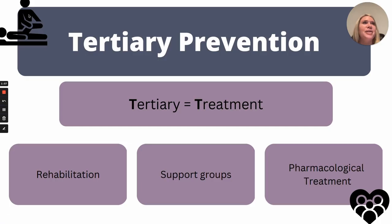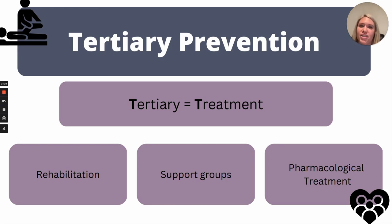And then last but not least, we have tertiary prevention. And once again, we can think tertiary equals treatment. They really made it that easy for us. So with tertiary prevention, we are preventing the condition after it occurs. One way would be rehab after a patient suffers a stroke — the condition has already occurred, and now we are working to rehabilitate the patient back to their baseline as much as we can. Another way would be if a patient has a history of drug abuse and is now attending support groups to help manage their addiction. And lastly would be as simply as a diabetic patient taking metformin to help lower their A1C. These are all examples of tertiary prevention.